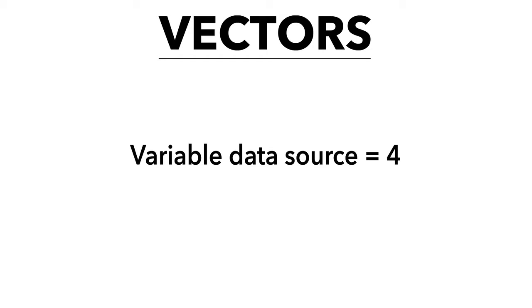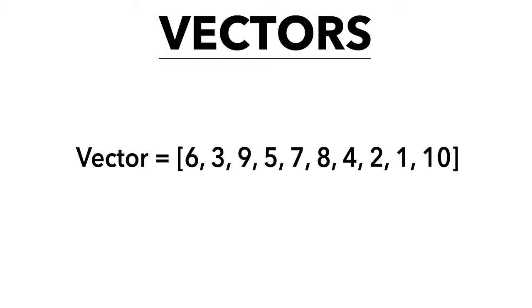First thing, we're going to look at a variable — a variable data source. It can equal a number, so right here I just have a variable data source equals 4. Now, a vector looks like this. A vector is equal to more than one number. The way you access those numbers is by the index, and the index is the position in which the numbers are in the vector.